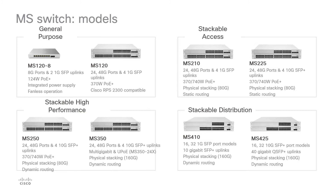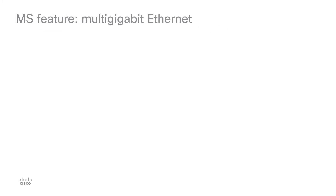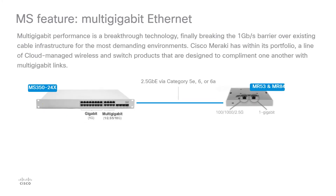Gigabit connections have served us well for many years, bringing fast, low-latency data to PCs, phones, and other devices. With rapid advances in wireless technology, the latest generation of access points can overwhelm any gigabit connection, making the wired network a performance bottleneck. With wireless becoming the dominant medium, a technology was needed to push past the long-standing 1-gigabit limit. Multi-gigabit is the technology capable of delivering up to 10 gigabits per second to the most demanding IT equipment.